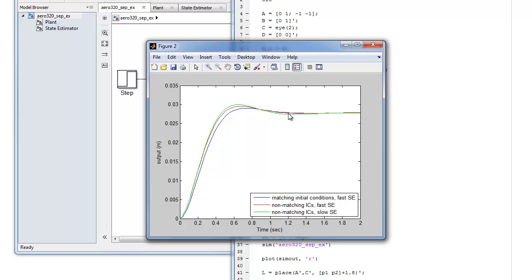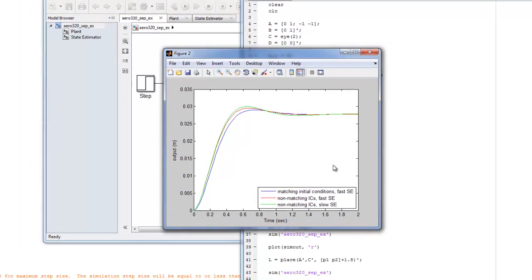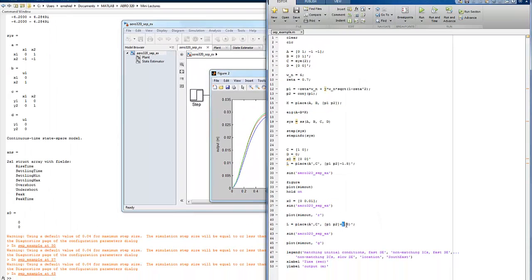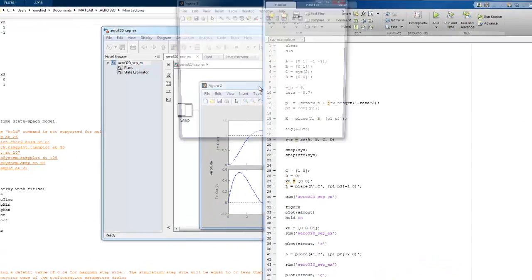And then the green one is where we made the poles slower. And so what this does is it doesn't match up with the full state feedback as well. And so in other words, we get more overshoot, we get a slower settling time, because the full state feedback is using the non-converged or the bad estimate for the estimated state. And notice if we make these even slower, then we'll get convergence that gets even worse.